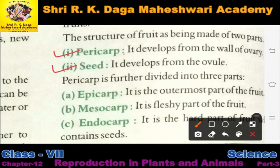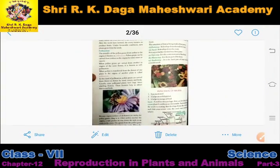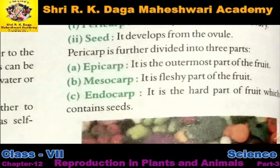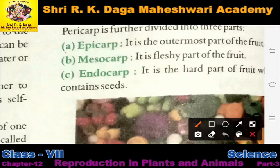The two parts of a fruit are: pericarp and seed. The pericarp develops from the wall of the ovary, and the seed develops from the ovule. Jo pericarp hota hai woh ovary ki walls se develop hota hai, aur jo seeds hote hain woh ovule se develop hote hain.